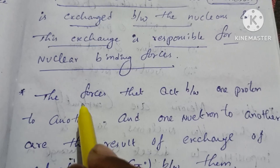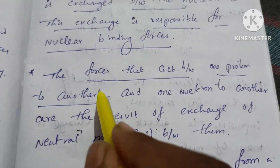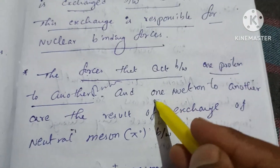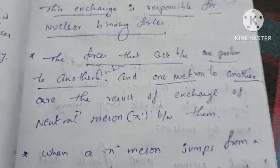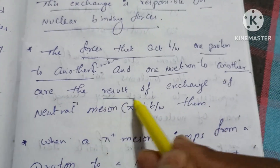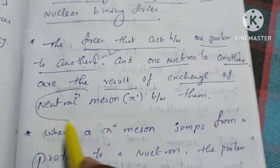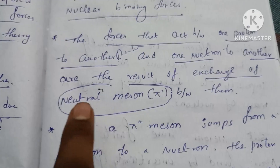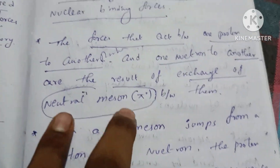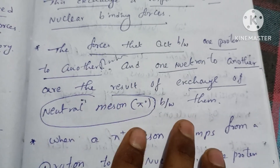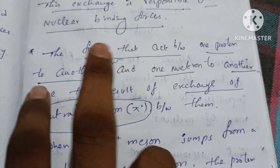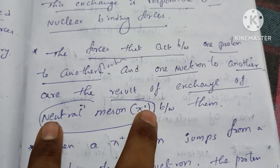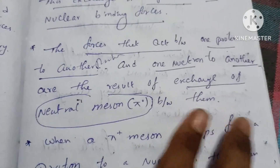The forces that act between one proton and another proton are the result of the exchange of a neutral meson, pi-naught. This neutral pi-naught meson is exchanged between the two protons, mediating the nuclear binding force between them.